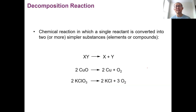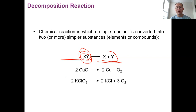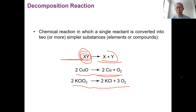The next type is kind of the opposite of combination, called decomposition. From a single compound — it has to be a compound — it decomposes to give you two or more substances. These simpler substances can either be compounds or elements. We know the reactant has to be a compound. The first example is copper(II) oxide decomposes to give copper and oxygen. The second one is potassium chlorate decomposes to give potassium chloride and oxygen. Both reactions go from a compound to simpler substances.